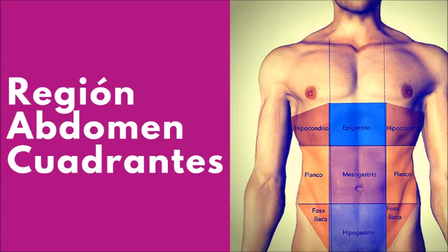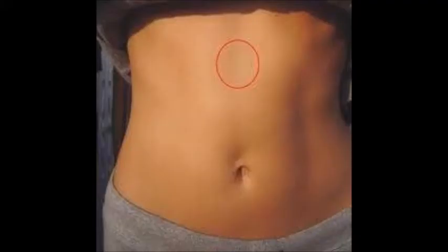The upper right quadrant contains the right side of the liver, the right kidney, a small portion of the stomach, the body and head of the pancreas, part of the ascending and transverse colon, and part of the small intestine.